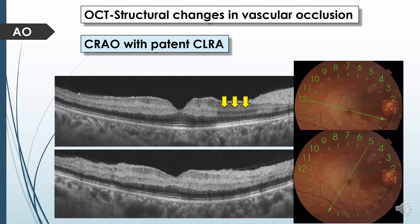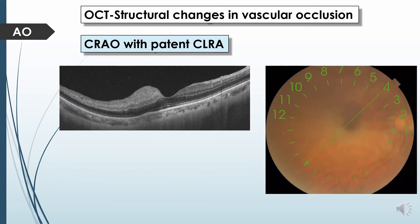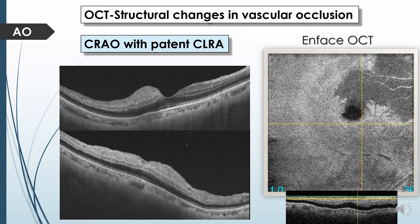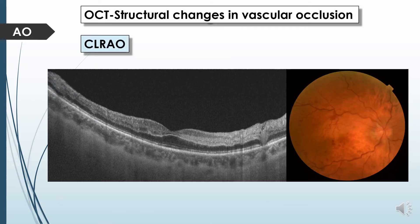Another patient with central retinal artery occlusion with patent cilioretinal artery demonstrates use of the en-face OCT scan at the level of the inner retinal layer, giving an excellent panoramic view differentiating between the perfused area supplied by the patent cilioretinal artery and the hyperreflectivity in the ischemic area supplied by the occluded central retinal artery. Isolated cilioretinal artery occlusion may be seen as a sequela of central retinal vein occlusion, representing a hemodynamic obstruction rather than a mechanical one, secondary to decreased perfusion within the cilioretinal artery.